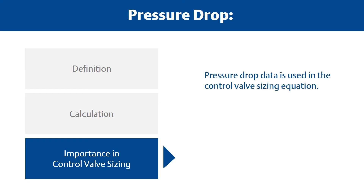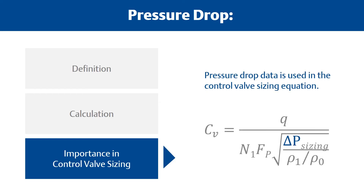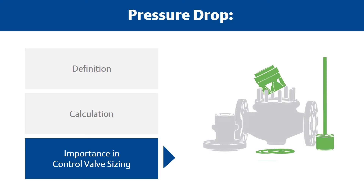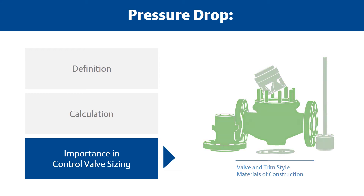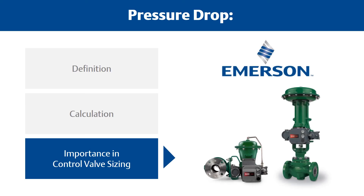Pressure drop data is used in the control valve sizing equation and is critical for proper valve selection. Control valve flow is a function of both the pressure drop across the valve and the valve travel. In control valve selection, pressure drop plays a role in determining not only the valve and trim style, but the materials of construction as well. Higher pressure drops generally require highly engineered control valves for good performance.